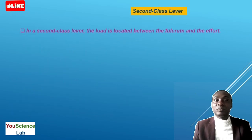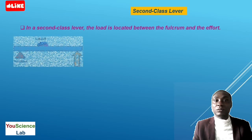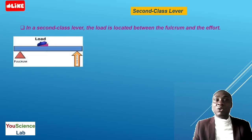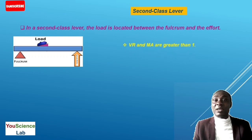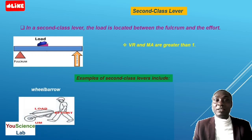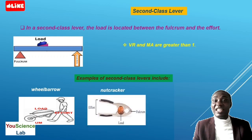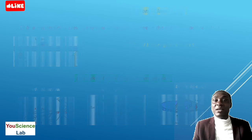In a second class lever, the load is located between the fulcrum and the effort. You can see that the load is in between the fulcrum and the applied force, also known as the effort. The velocity ratio and mechanical advantage of a second class lever are always greater than 1. Examples of second class levers include: a wheelbarrow, a nutcracker, and a bottle opener. In all of these, the load is always between the fulcrum and the effort.